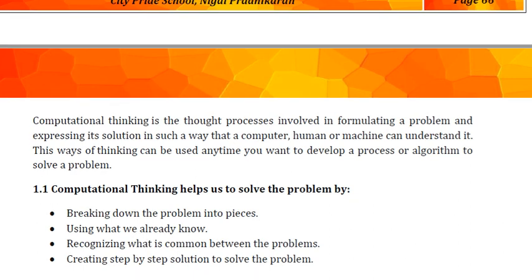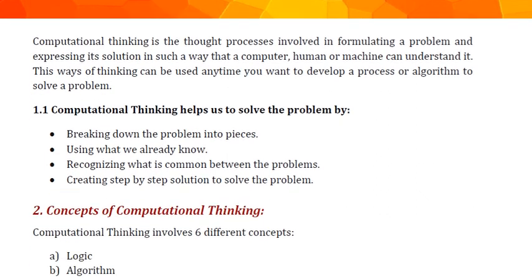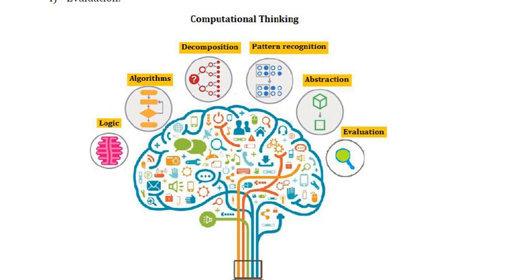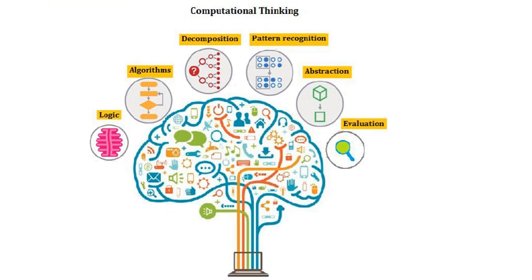There are six concepts involved in computational thinking. Those are: first, logic; second, algorithm; third, decomposition; fourth, pattern matching; fifth, abstraction; and sixth, evaluation. You can see the image on your screen which shows all the six concepts of computational thinking.